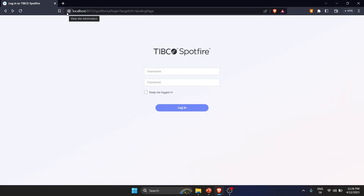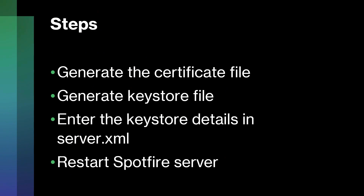Let's see step by step how to implement this. At a very high level, we have four steps. The first is to generate a certificate file for your website. In a production or project scenario, you will get this file from your IT team or request your infra team. If they don't provide it, or if you're learning, you can use a self-signed certificate — that's what we'll use in this video.